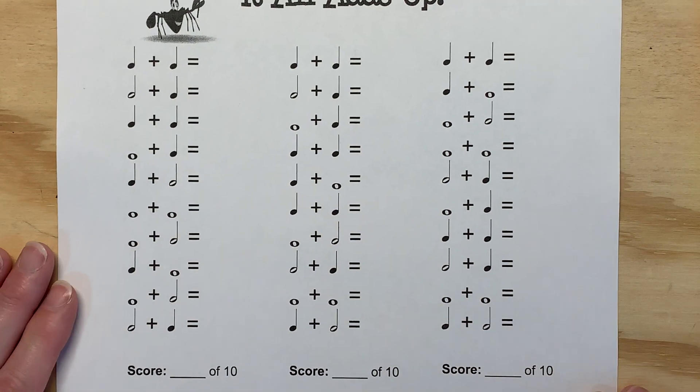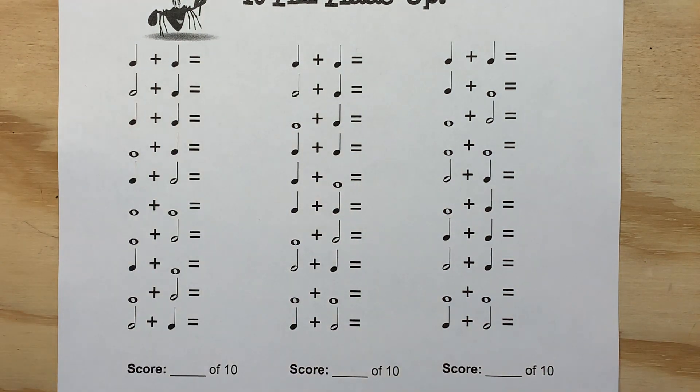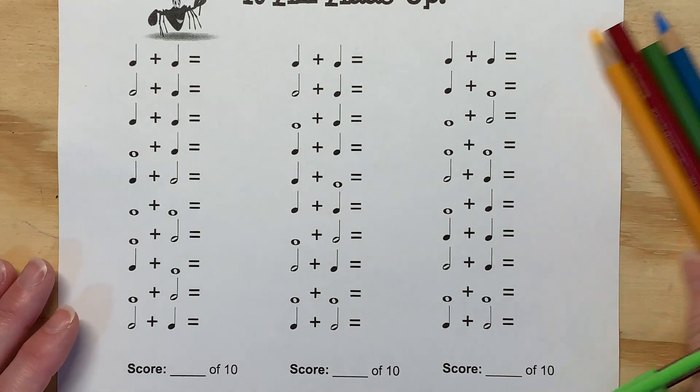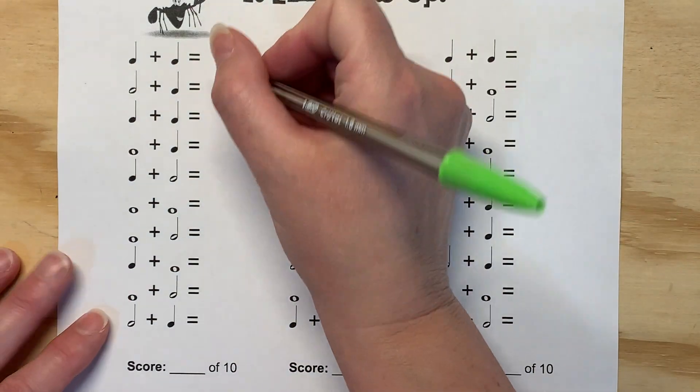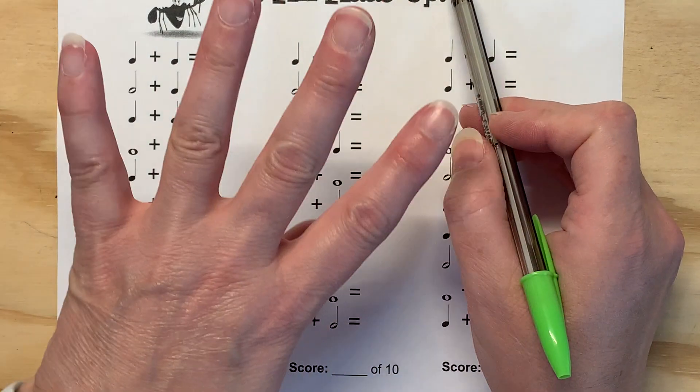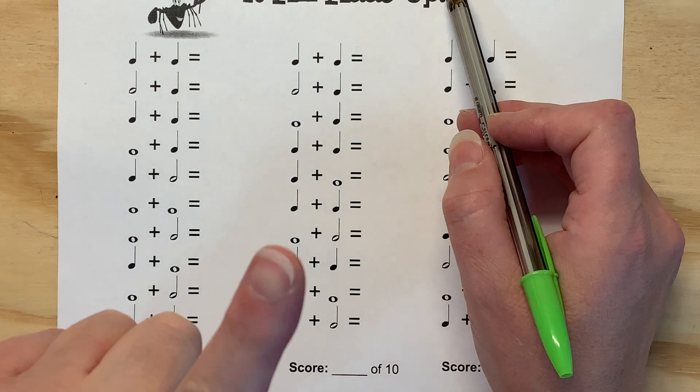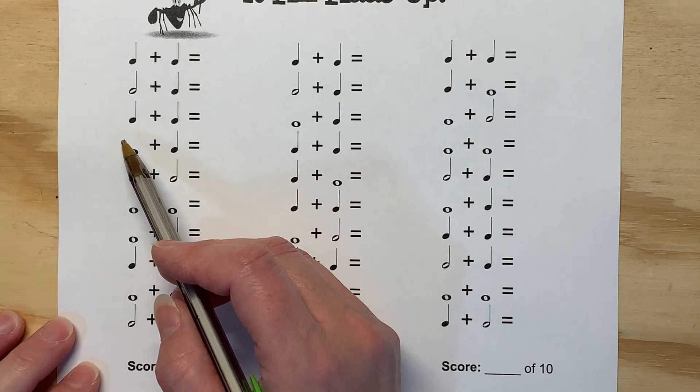All right, so you came back. Here I'm going to write down the answers to column one. So remember, a whole note gets four beats, a half note gets two beats, a quarter note gets one beat. So let's practice.